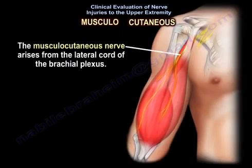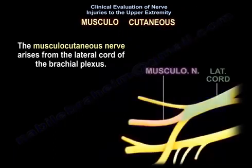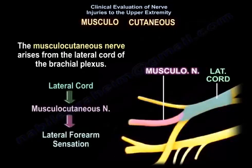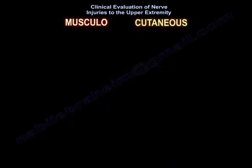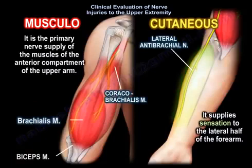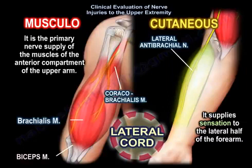The musculocutaneous nerve arises from the lateral cord of the brachial plexus, supplying sensation to the lateral half of the forearm. It is the primary nerve supply of the muscles of the anterior compartment of the upper arm: coracobrachialis, the brachialis, and the biceps.